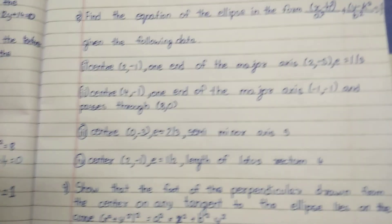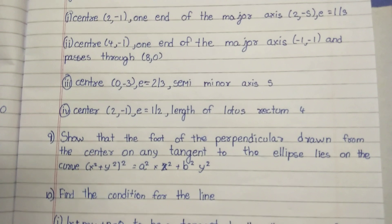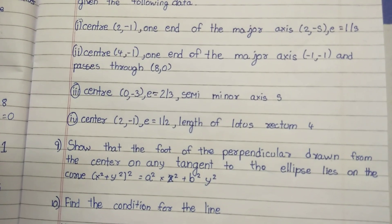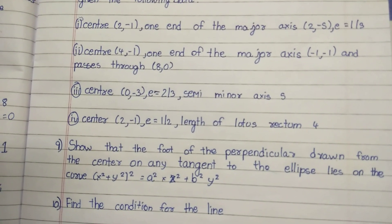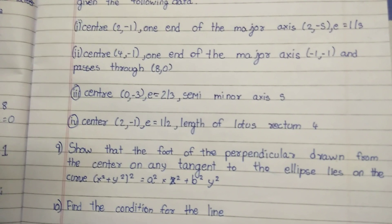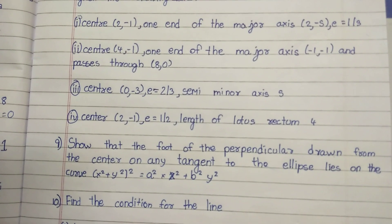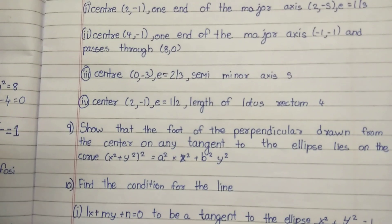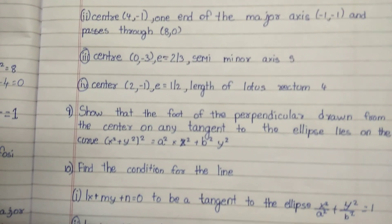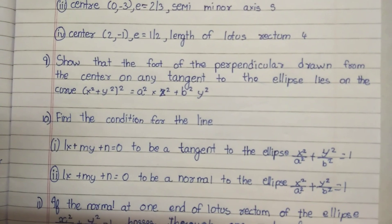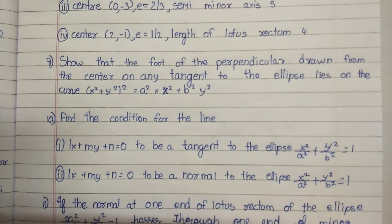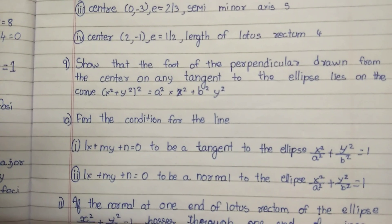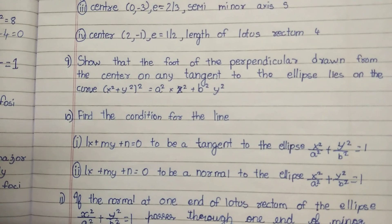Now, we have to show that the perpendicular drawn from the center on any tangent to the ellipse lies on the curve x² + y² whole square = a²x² + b²y². Okay, it is also important. Next, find the condition for the line to be a tangent and the condition for the normal.